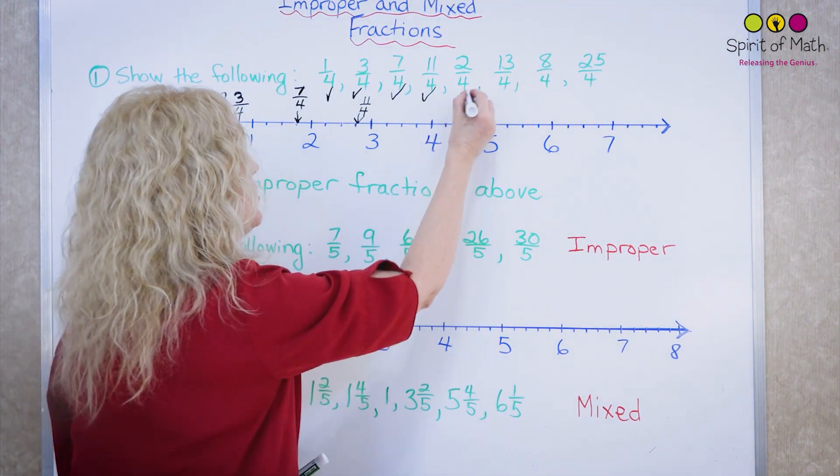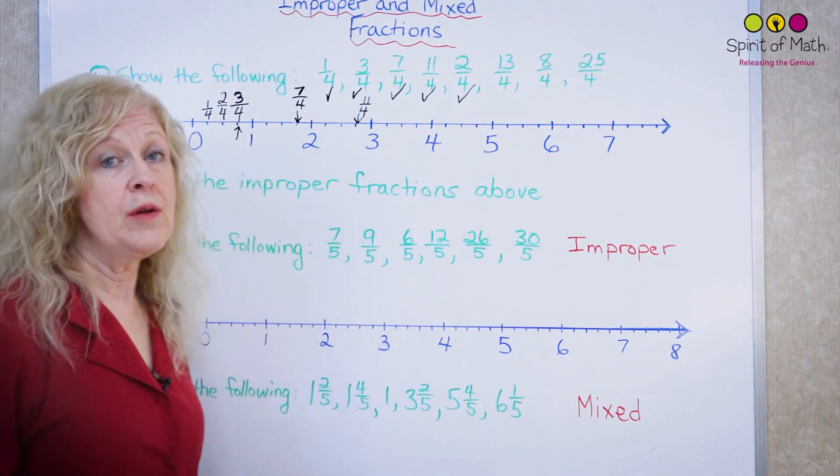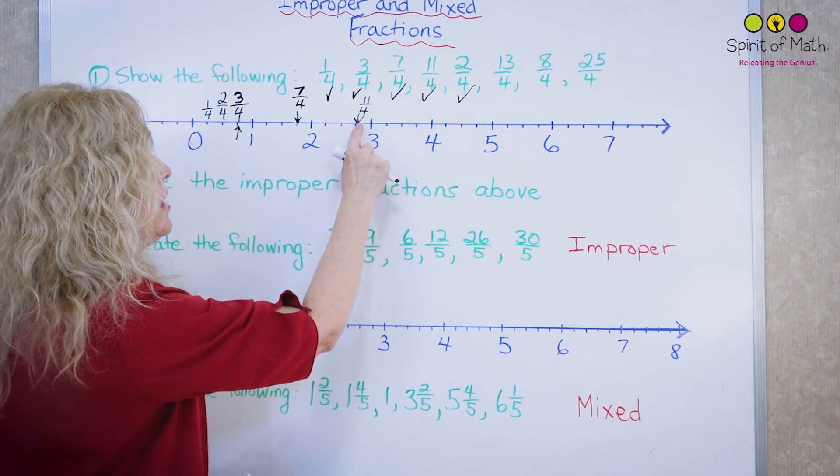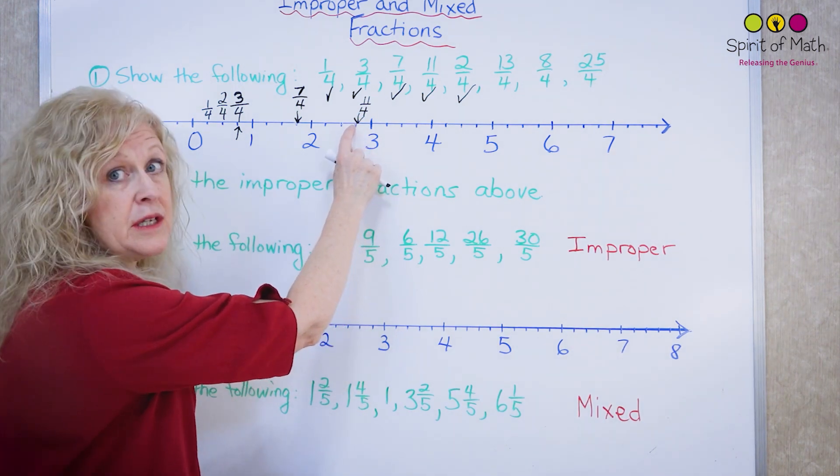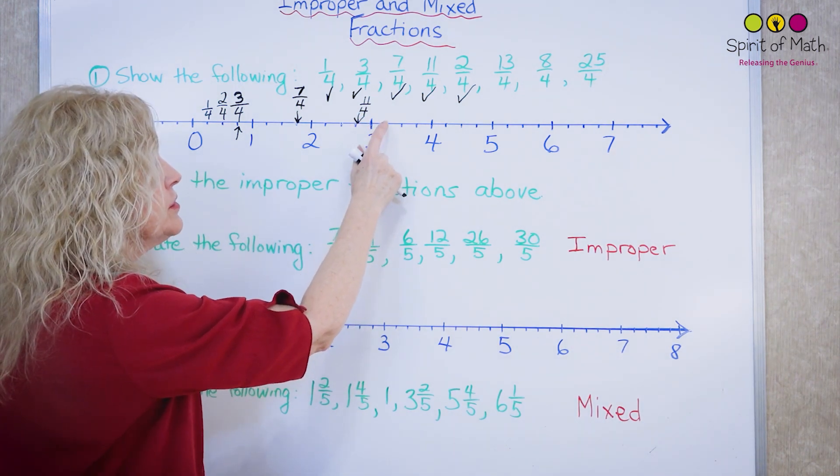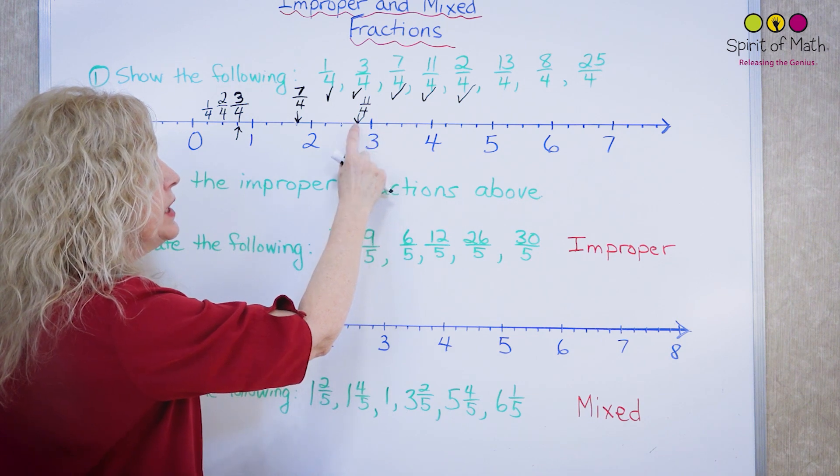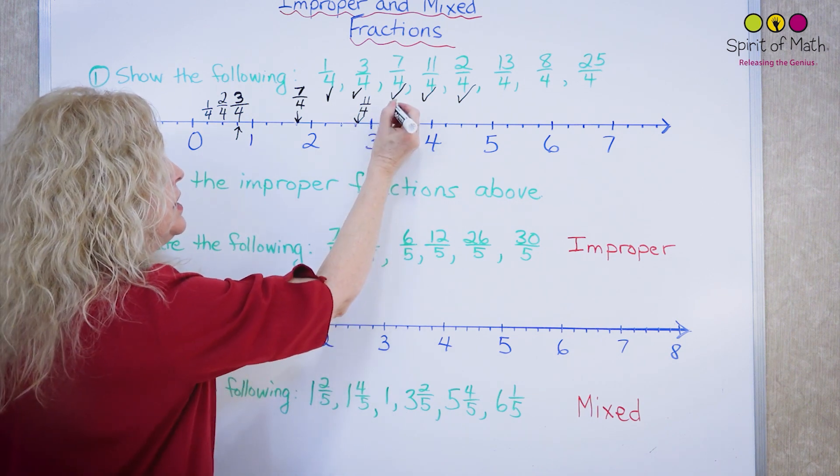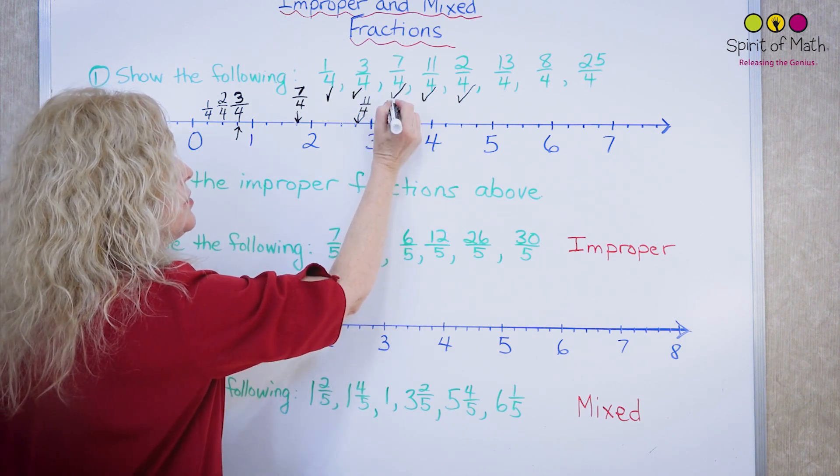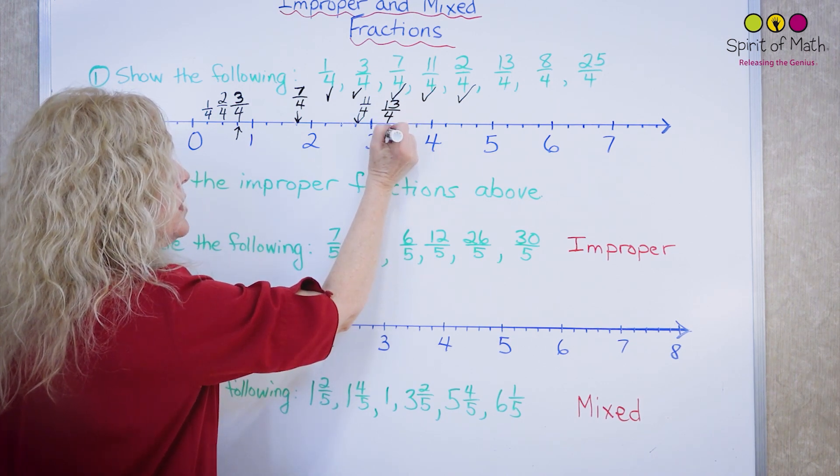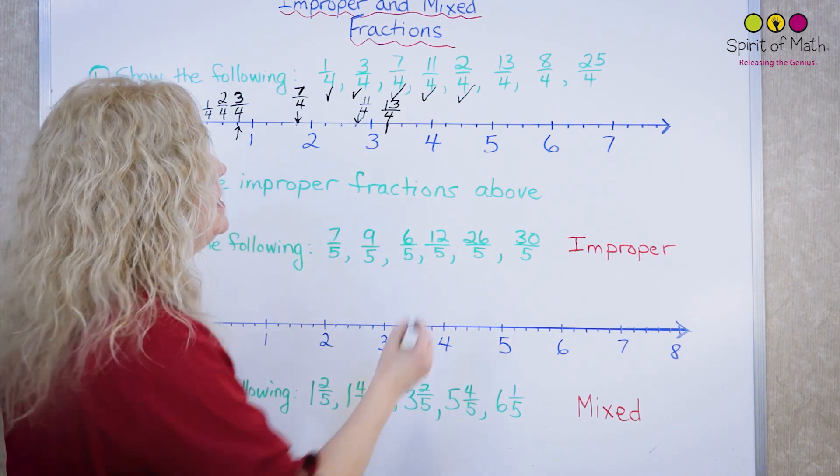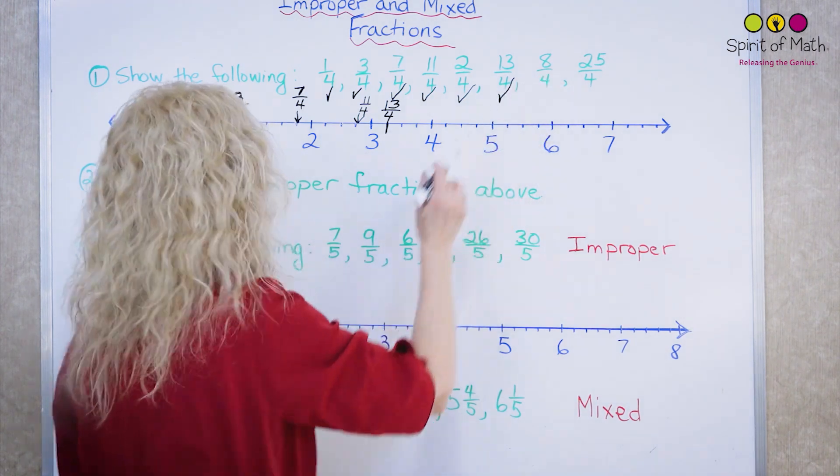Now you've got thirteen quarters. Rather than starting right back here, I already know where the eleven quarters is. This is the twelve, so the thirteen would be right here. Eleven, twelve, thirteen. So this one is thirteen quarters right here.